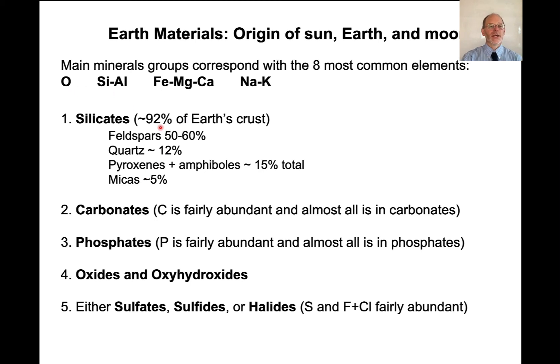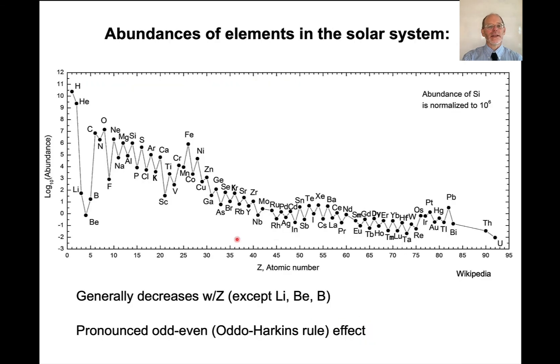Micas have potassium, silicon, aluminum and oxygen. So the abundance of these elements is why we see the silicates. Why do we have carbonates? Carbonates have carbon, it's fairly abundant, and almost all is in carbonates bonded with oxygen. Phosphorus, we have a lot of phosphates. Phosphorus is pretty abundant. Almost all of that is in phosphates. We have lots of oxides and oxyhydroxides because there's lots of oxygen created by stellar fusion. And then the other most common minerals are sulfates, sulfides or halides, and that's because sulfur and fluorine and chlorine are fairly abundant.